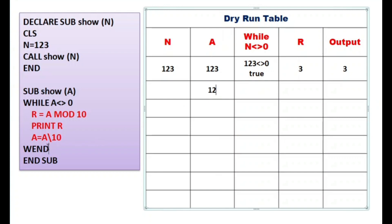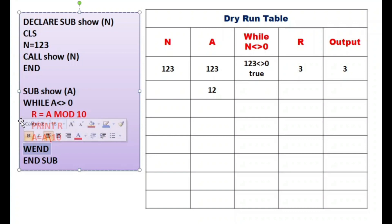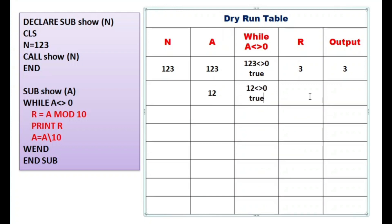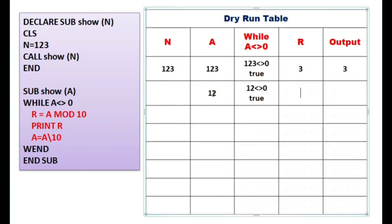Now checking the condition: a not equals to 0 — value of a is 12, and 12 not equals to 0 is true. So we go inside the loop again. R = a MOD 10: value of a is 12, and 12 MOD 10 extracts the last digit, which is 2. So R = 2. Then PRINT R prints 2 in the output screen.